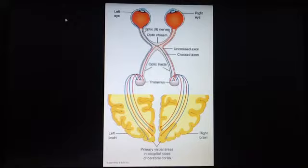What would happen if there was disruption of the optic nerve, one optic nerve? That would lead to blindness in that eye only. What would happen if there was disruption in the optic chiasm?